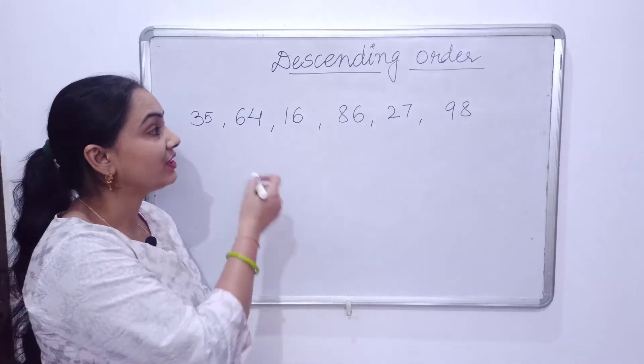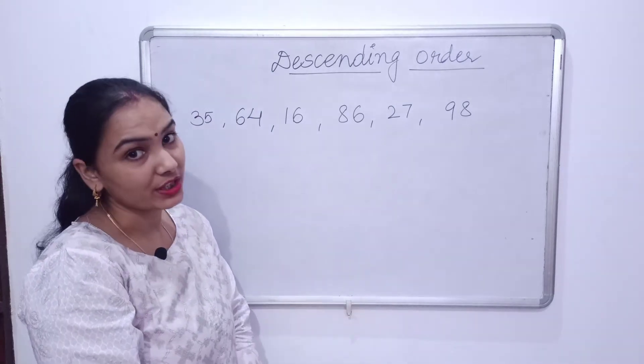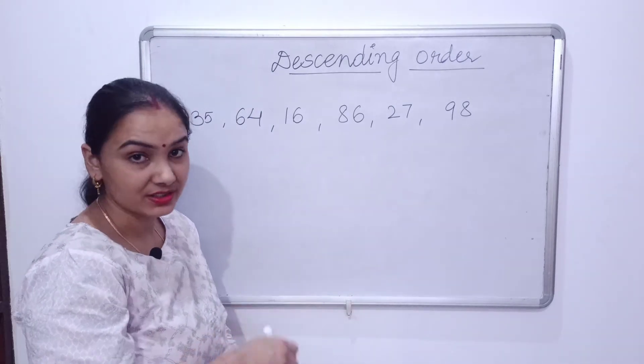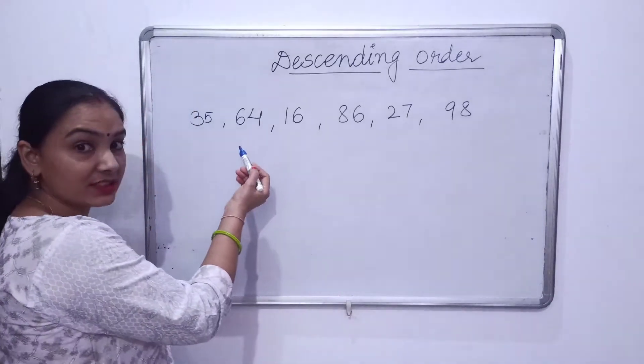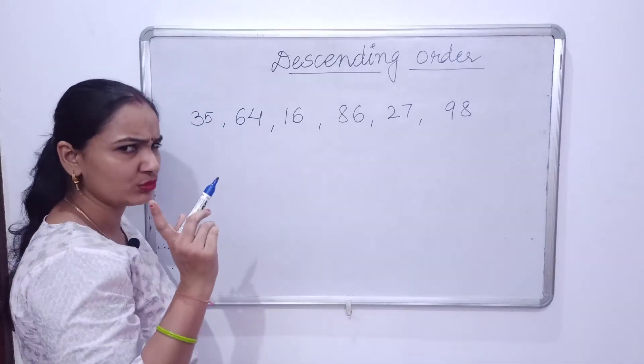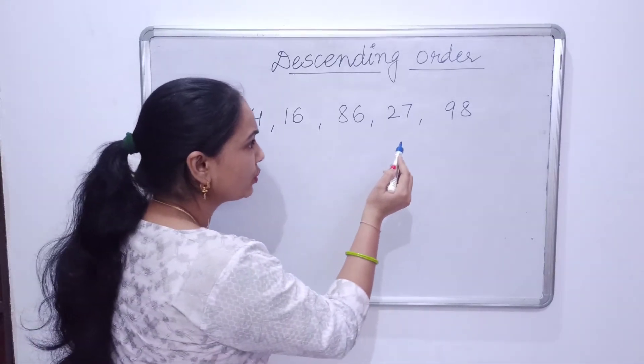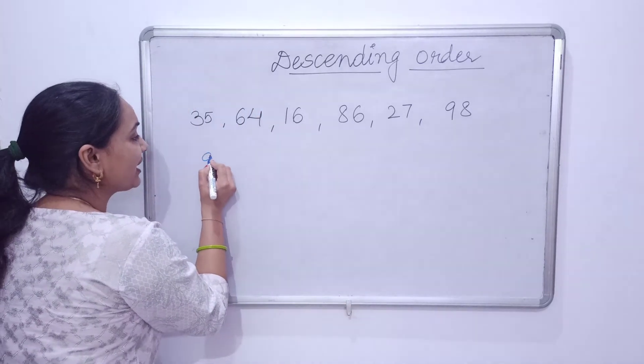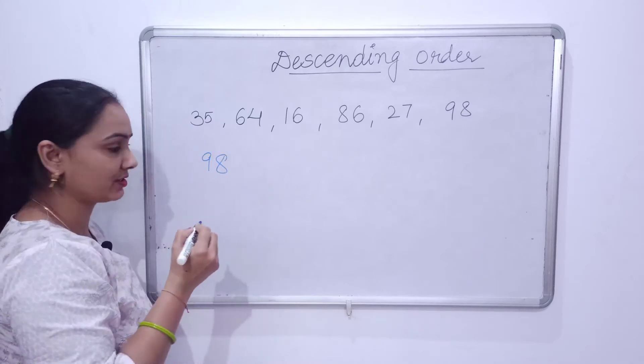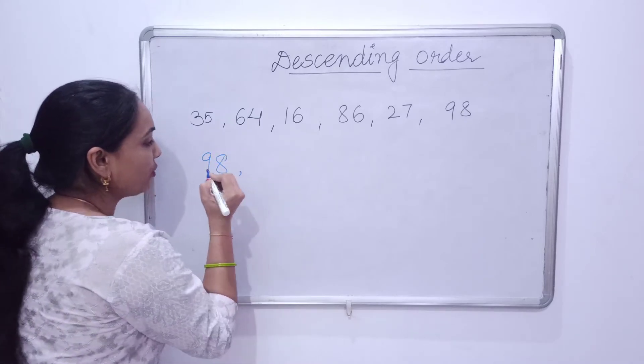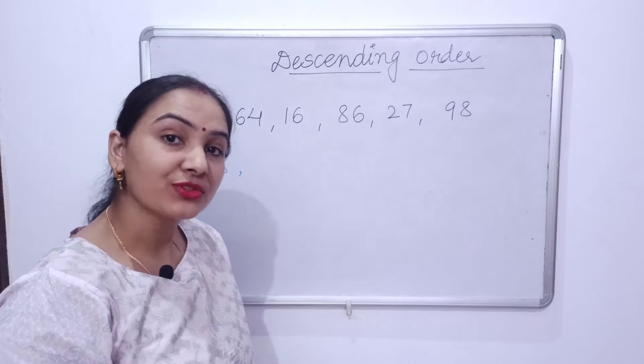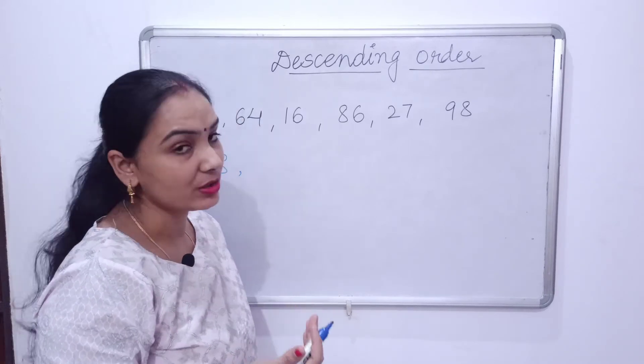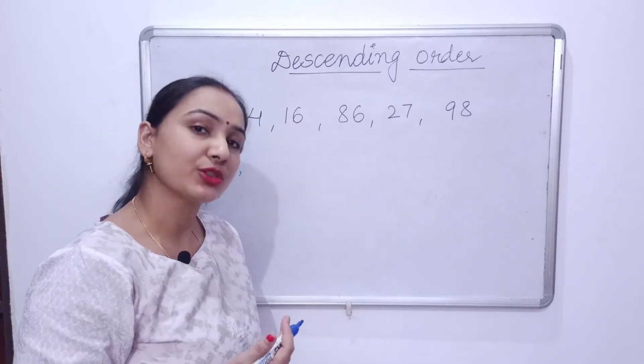First of all, we will see which one is the biggest number here. 64? No. 98? Yes. So 98 will come first. Now after choosing the biggest number, the series will go on.